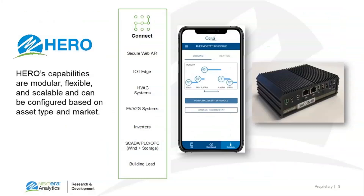The Connect functionality is how HERO actually connects to the various devices in the field. This is both a software and hardware solution. We interface with several different vendors' APIs, and we've built an app to interface with a thermostat vendor to control demand resources. We also have two flavors of edge compute devices. These can continue to run when communications are down and support dispatch of batteries or other assets for several days or weeks if needed. They also work as data loggers and can interface directly with devices on site.